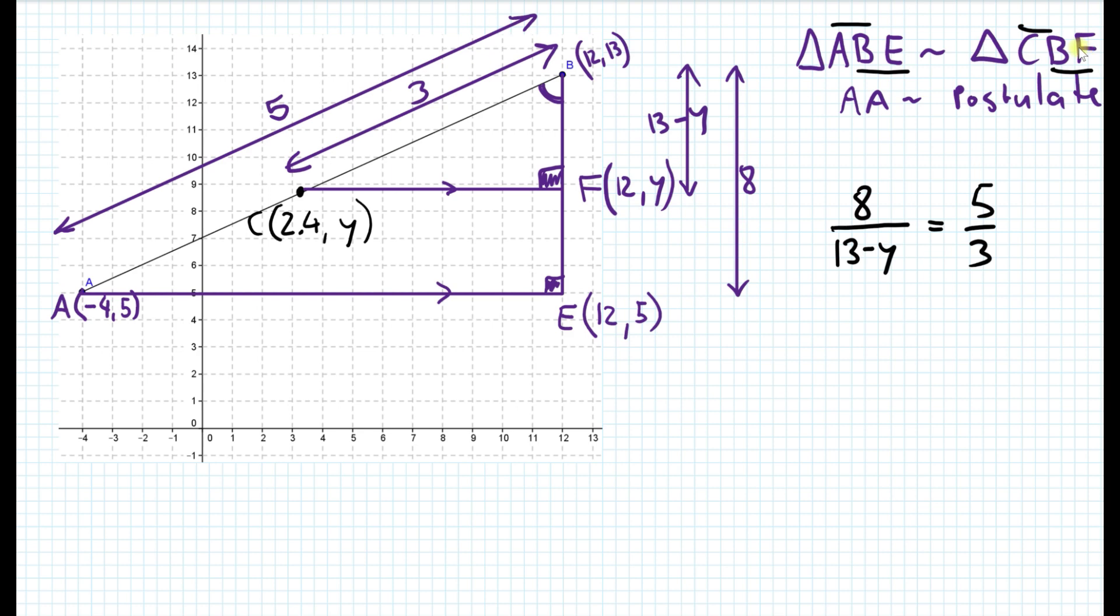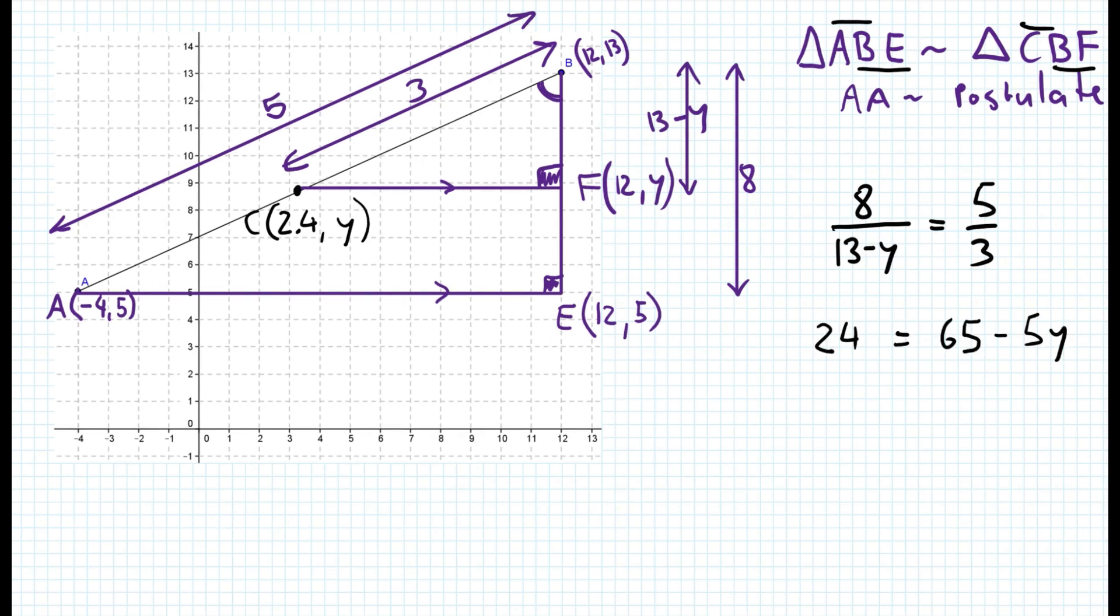Once we set up the proportion, now all we need to do is, again, cross-multiply and figure out the value of Y. So here first, we do three times eight. So here we get 24 is equal to 65 minus 5Y, which means that 5Y is equals to 41. And therefore, Y is 8.2. And that is basically the Y coordinate of the C value. So let's write this in here, that the Y value is 8.2. And that is basically the answer to the problem.